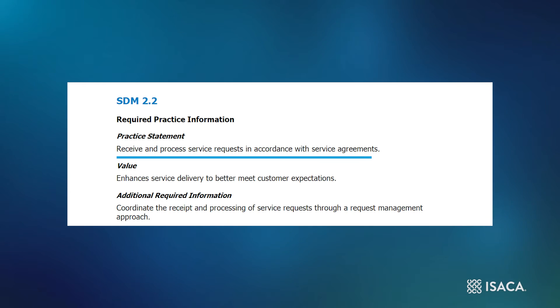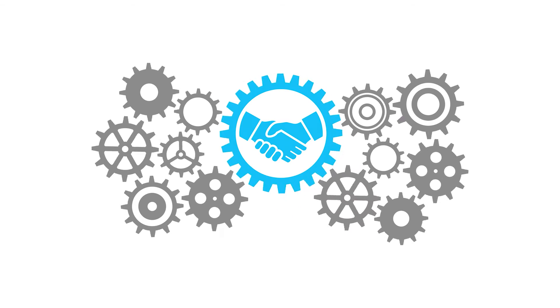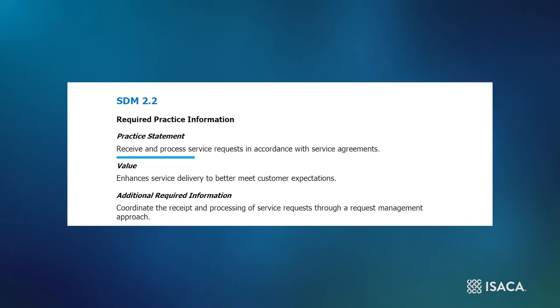SDM 2.2 looks for organizations to receive and process service requests in accordance with service agreements. This practice builds upon the level one practice in two very important ways. First, whereas SDM 1.1 looks for organizations to deliver services, this practice introduces the idea of a service request. Although this may seem obvious, it reinforces the transactional nature of service delivery, which is key to ensuring a mutually beneficial relationship between supplier and customer. To receive a service from the organization, the customer must first request it. The idea of a formal trigger for service delivery is important, as we should receive and process service requests in accordance with the service agreement.